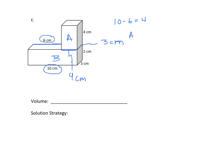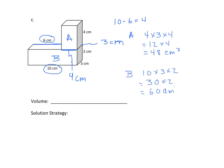Let's do A. I have the dimensions of 4 by 3 by 4, so we'll multiply 4 times 3 times 4. 4 times 3 is 12, and 4 times 12 is 48 centimeters cubed. Now let's find B. I have 10 by 3 by 2. 10 times 3 is 30, times 2 equals 60 centimeters cubed. Now we find the sum: 48 plus 60 equals 108 centimeters cubed.